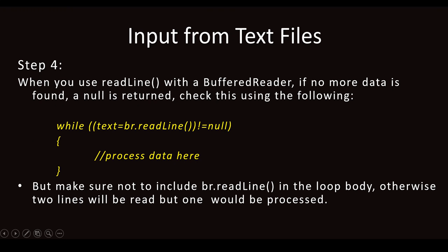In a while loop, this line should be used: while((text = br.readline()) != null). This condition is very important — once the condition becomes false, it will exit the loop. That means it keeps executing as long as the data in the file is not null; once it becomes null it stops and exits the loop. Make sure not to include br.readline() inside the body of the loop — it should be in the condition statement itself, otherwise two lines will be read but only one processed, which causes an exception.